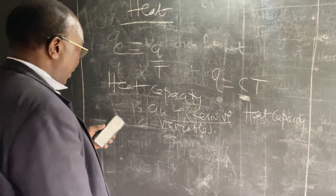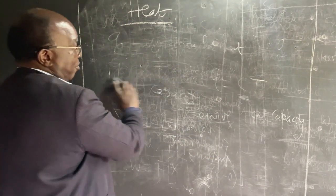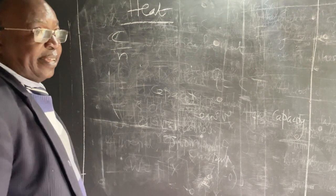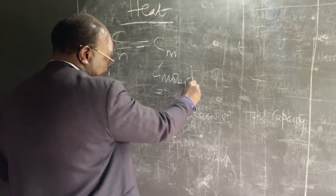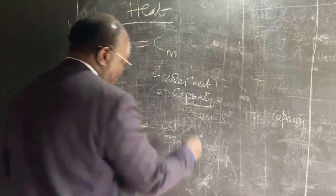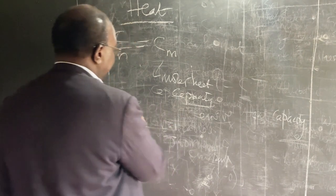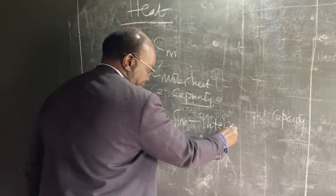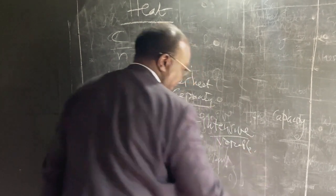But when we divide the heat capacity by the number of moles of that particular substance — let us denote the number of moles as N — then we get the molar heat capacity. This molar heat capacity is not an extensive variable but an intensive variable. In other words, it doesn't depend on the quantity of substances.